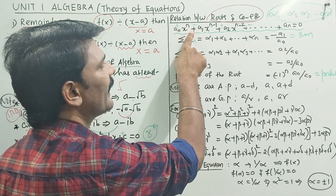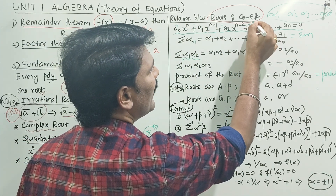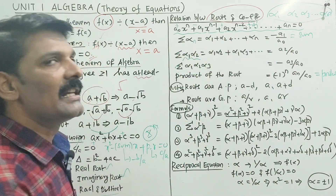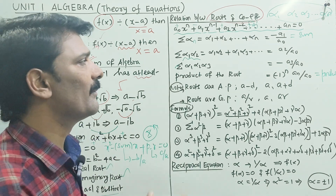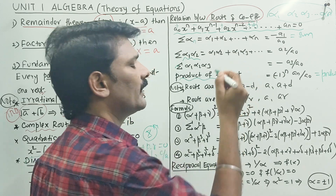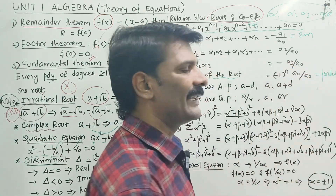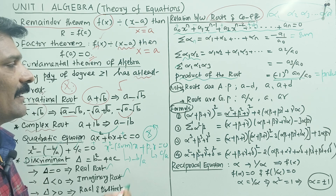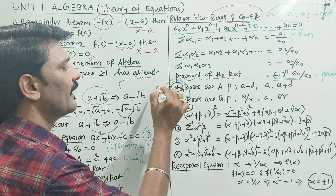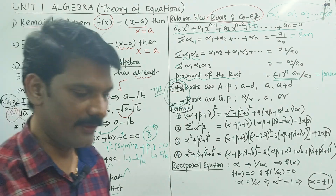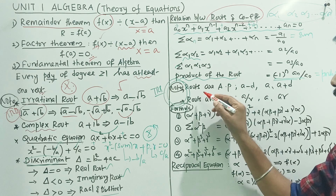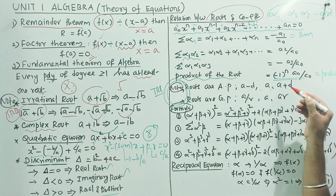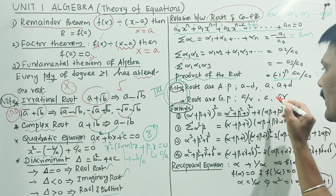Finally, the product of all roots equals (minus 1)ⁿ times aₙ upon a₀. This is the formula. The sum of roots and product of roots can be explained using these coefficient relations to help us understand the roots. The roots follow arithmetic progression or geometric progression — A minus d, A, A plus d for AP; and A/R, A, AR for GP.